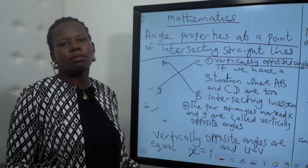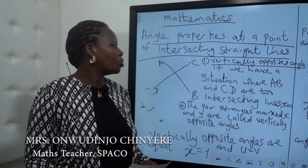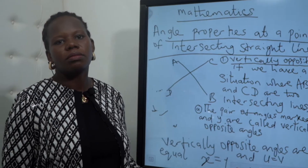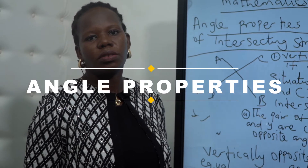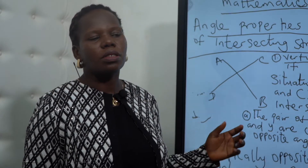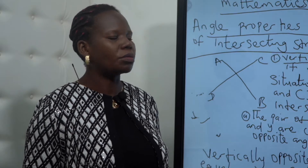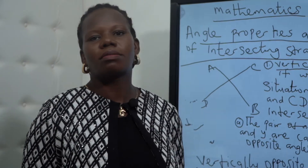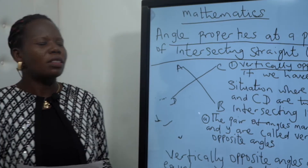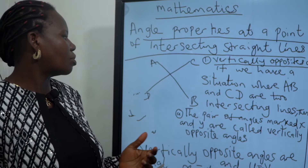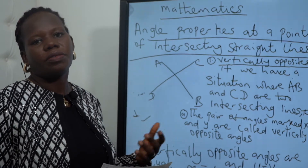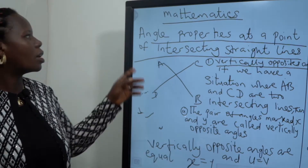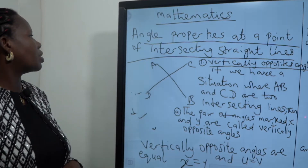Good morning students. In our previous lesson we talked about angles — the types and identification of angles. Before we start this lesson, you can see we're still on angles. Who can tell me the types of angles we discussed? We said we have a right angle, an acute angle, and an obtuse angle. In today's lesson we have properties of angles at a point of intersecting straight lines.